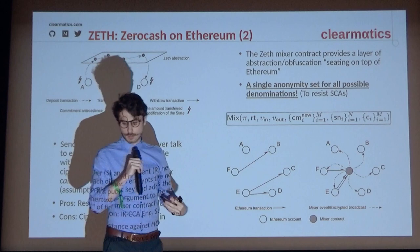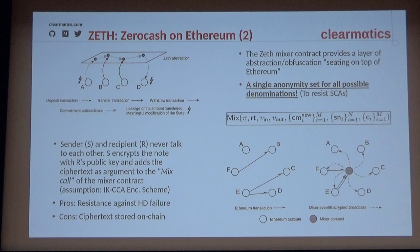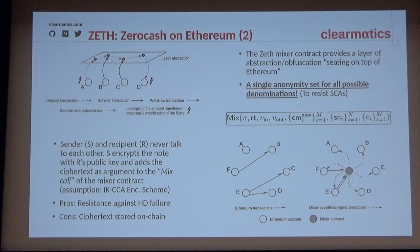The mix function has a public value-in input corresponding to value entering the mixer, a V-out for value you want to retrieve, and commitments representing the notes you want to spend. With this design, if an observer sees a mix with public value-in of 4, they can't tell whether you're depositing 4 for yourself or combining it with notes you own to pay someone 8. And since we support notes of arbitrary value, no one knows whether you're creating notes of value 2 and 2, or 3.2 and 0.8.